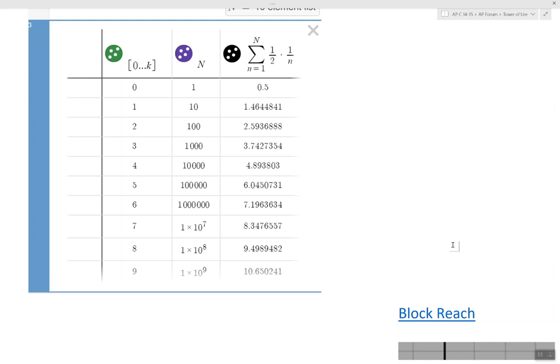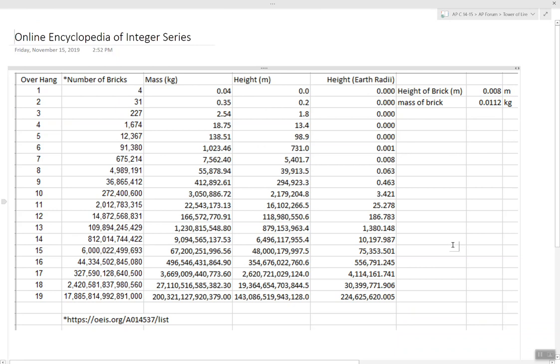Now look at this another way. This pattern, and I was looking on the Wikipedia. There was a link to this. I didn't even know this was a thing. There's an online encyclopedia of integer series. And you can see, to extend it one brick's worth, you have to have four blocks stacked. 2, 31, 3, 227, et cetera, et cetera. And it's kind of fun to look at how quickly the pattern grows.